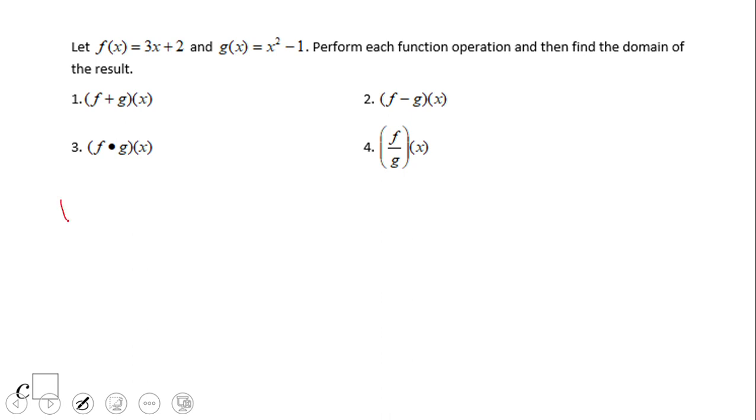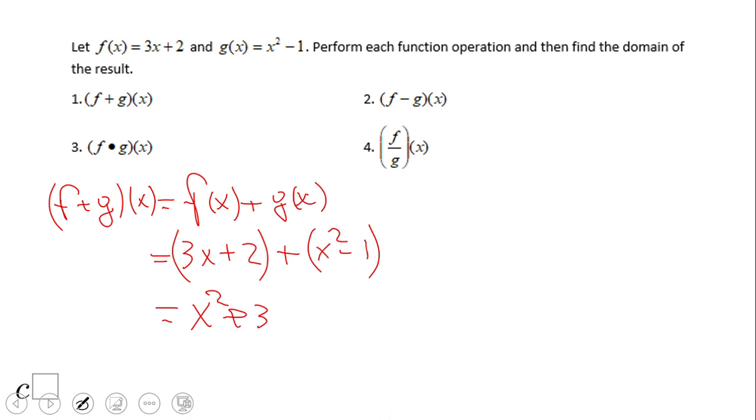Let's take a look at number one, which says f plus g of x. That means f of x plus g of x, simply that. Here we're going to replace the functions. f of x is 3x plus 2, and g of x is x squared minus 1. We're going to combine the like terms and we have x squared plus 3x, and then we have positive 2 plus negative 1, which is plus 1.